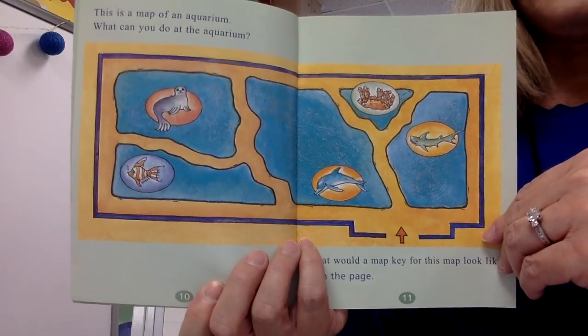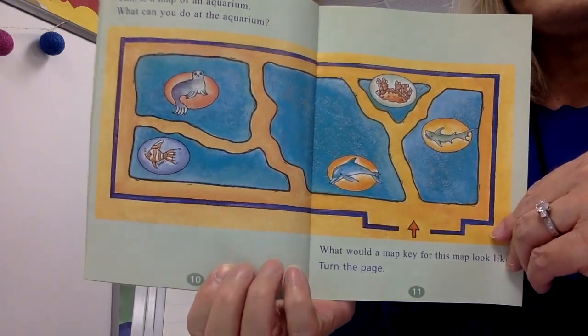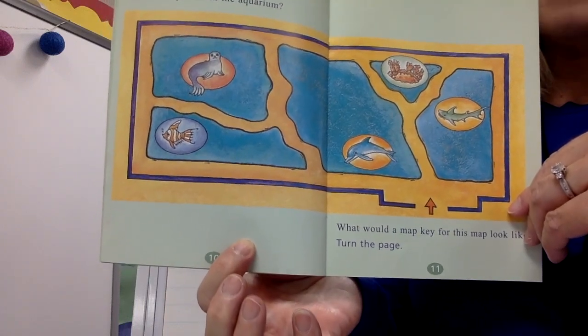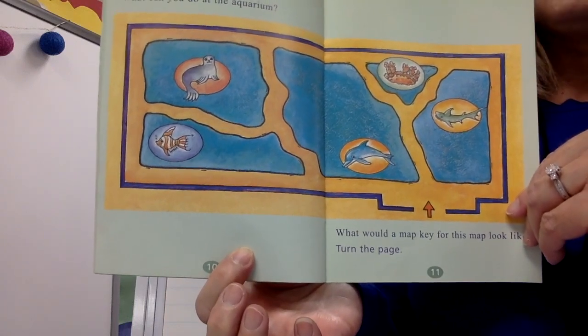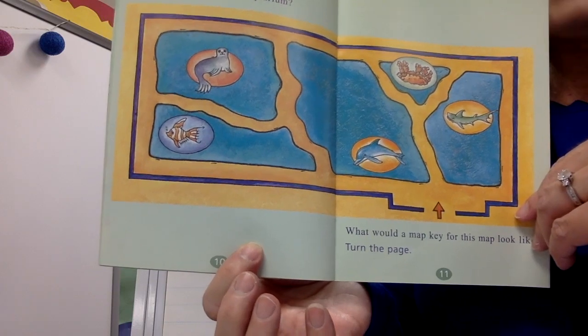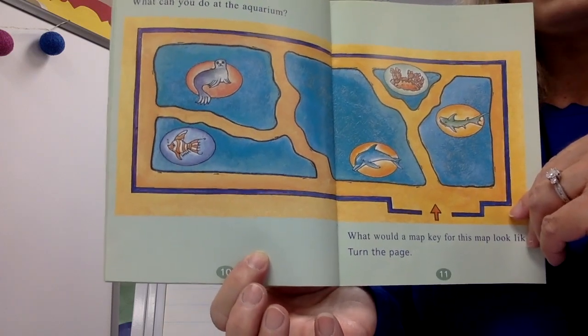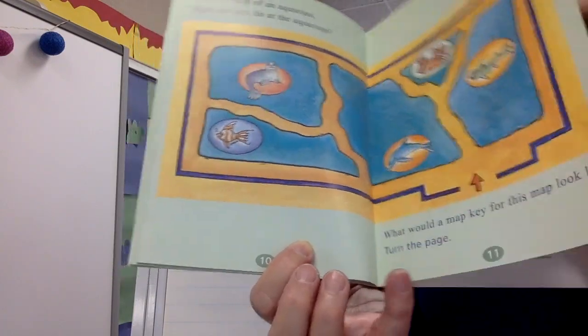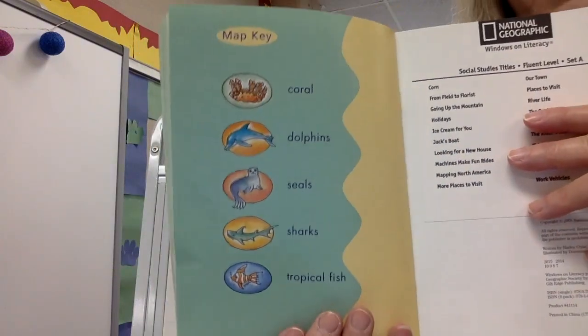This is a map of an aquarium. What can you do at the aquarium? What would a map key for this map look like? Well, you have all those items that they're labeled, that they have pictures of, and then you would label them, wouldn't you? Let's see. Yep. Map key.